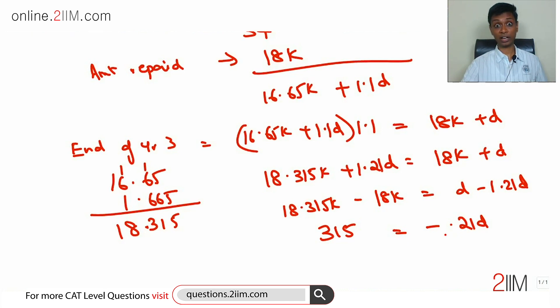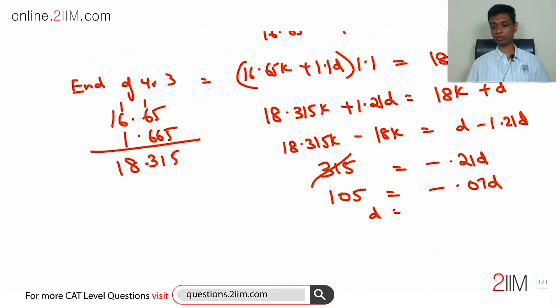This is 18,315 minus 18,000, which is 315 equals -0.21D. This is telling us that D is negative—it's an arithmetic progression, a decreasing arithmetic progression. So 315 divided by 0.21. Maybe we can cancel off a 3. This becomes 105 equals -0.07D.